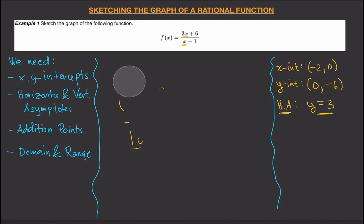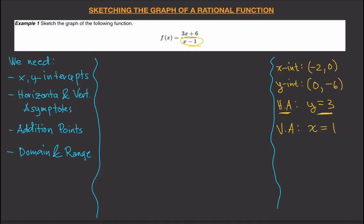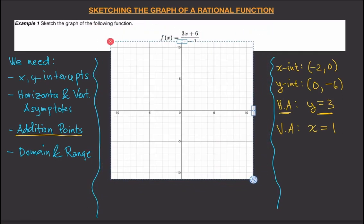For the vertical asymptote, simply take the denominator and set it equal to zero. So x − 1 = 0, giving x = 1. That's your vertical asymptote: x = 1. We may need additional points later depending on how the graph looks.